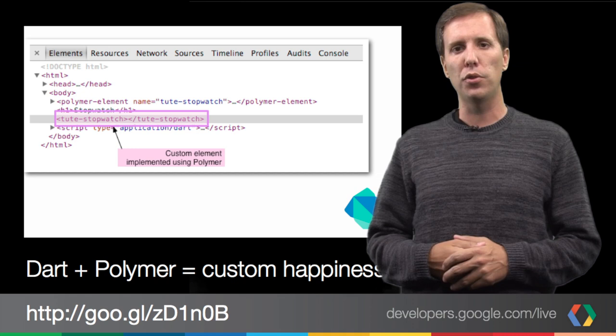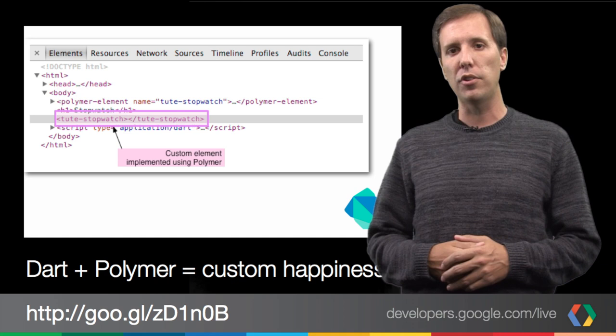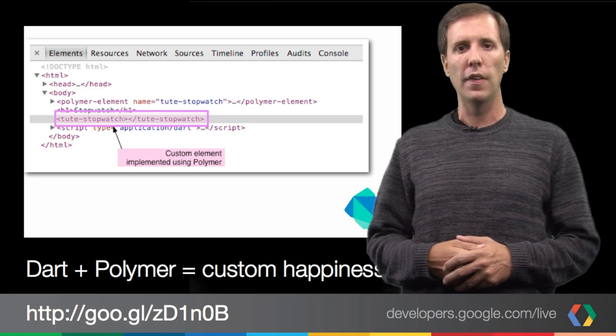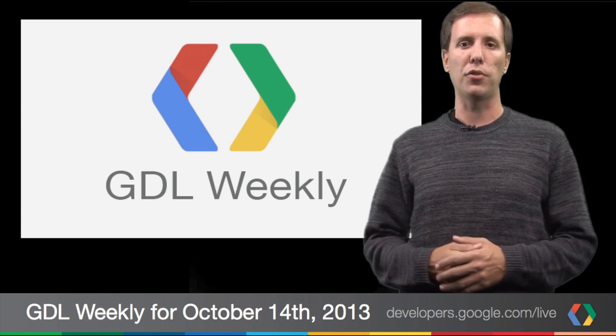This week, the Dart team released a new tutorial that uses the Polymer Web Component Library. This tutorial shows you how to create custom HTML elements with Polymer. Along the way, you'll learn how to include Polymer in your apps for starters, and then everything else you need to add to your custom elements.